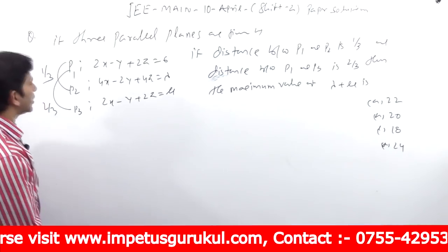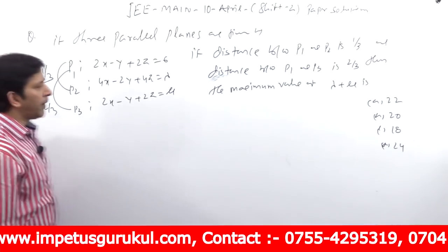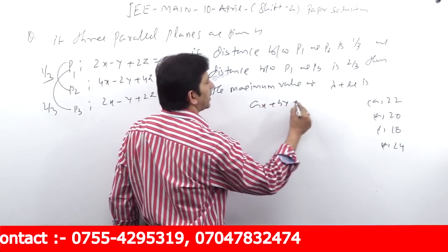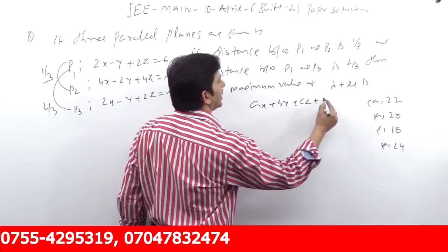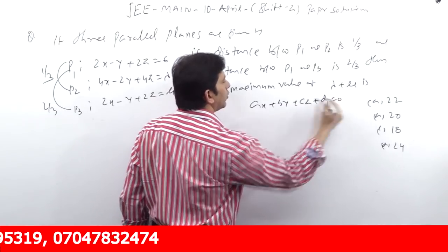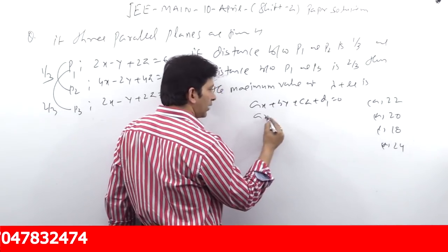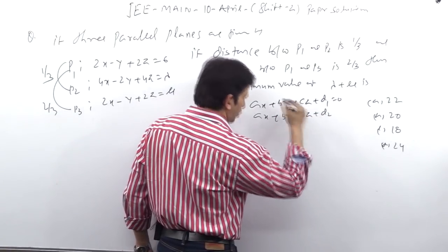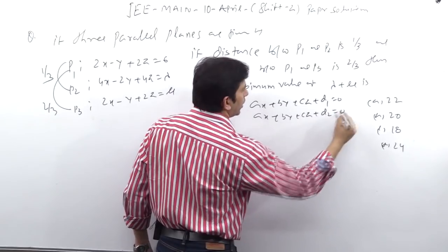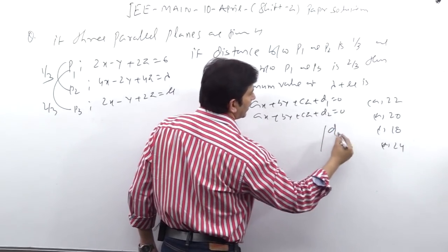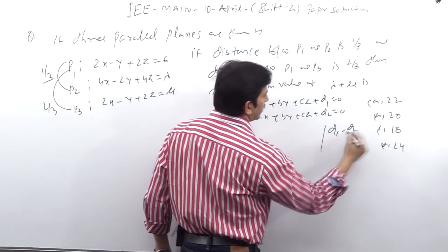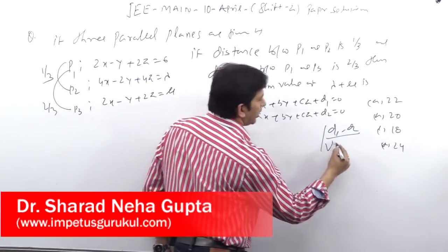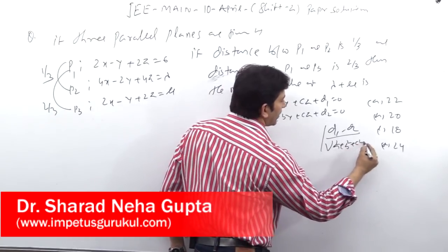This is a very simple question. If we have two parallel planes — ax + by + cz + d1 = 0 and a parallel plane — the direction ratio of the normal is the same. So the distance formula is |d1 - d2| upon √(a² + b² + c²).